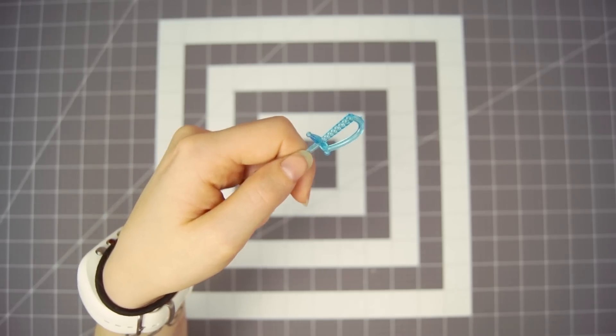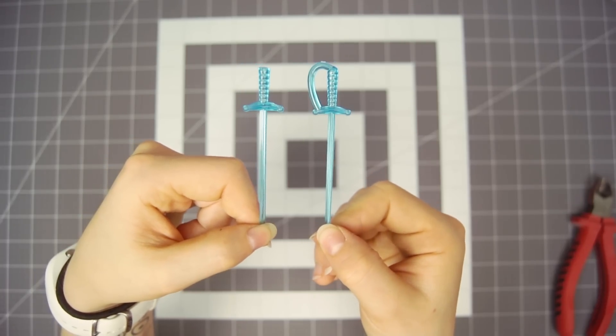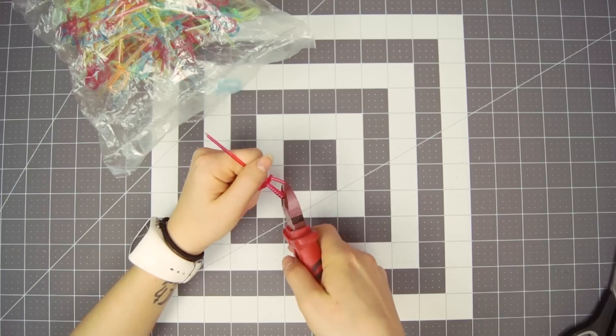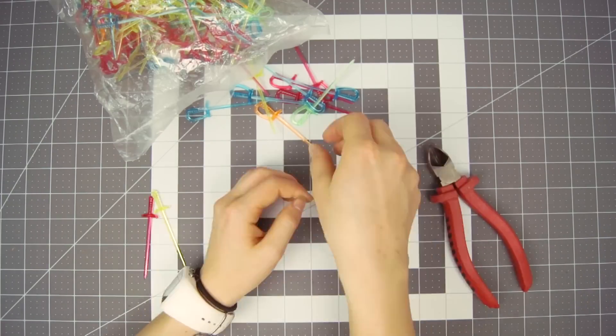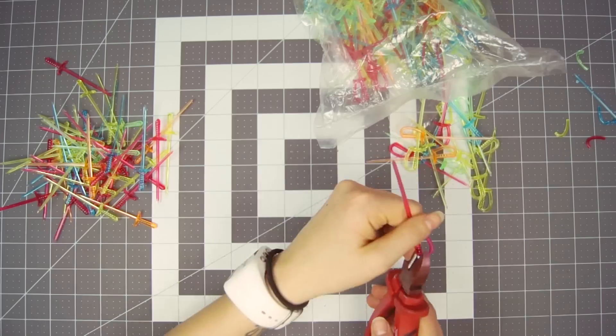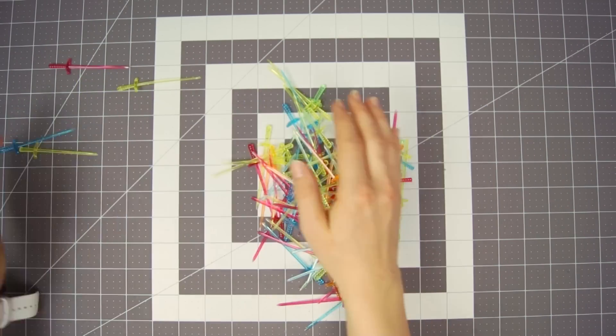I began preparing the cocktail swords by cutting off this part of the handle. So this is the difference. Now I just gotta deal with the rest of them. At first I bought a pack of 300 swords which turned out to be way too little so I had to buy another pack. I actually ended up using all 600 swords. Alright I'll put those aside for now.